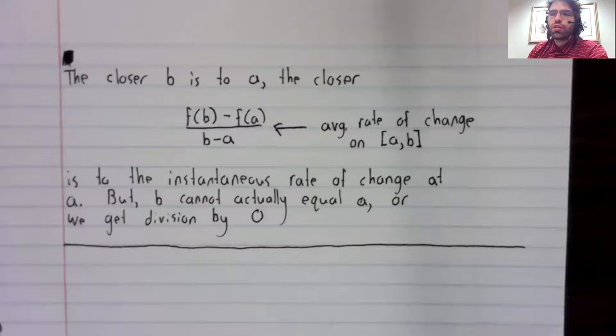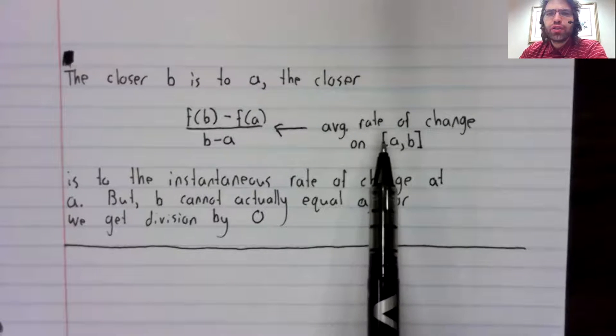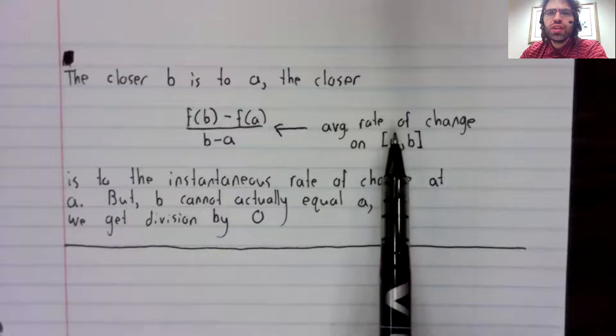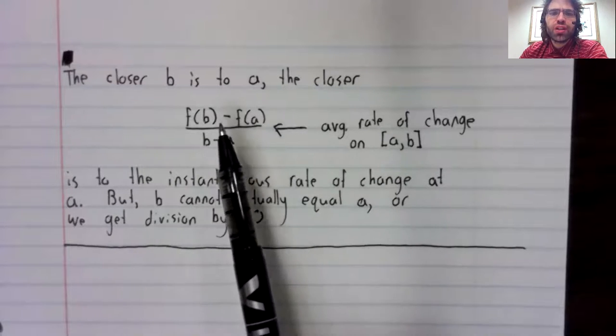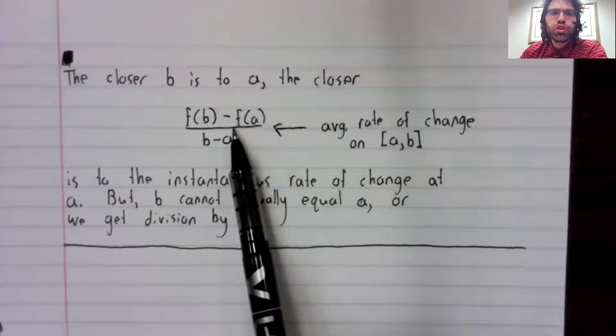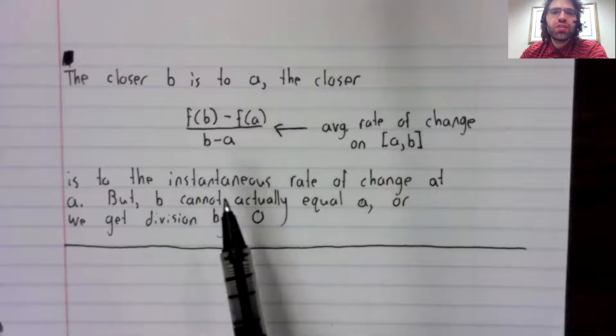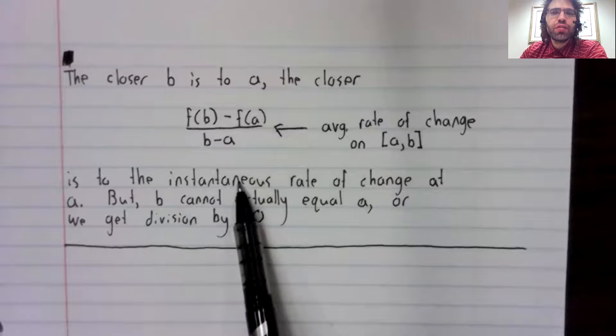So, summarizing and writing down what I said, the closer b is to a, the closer the average rate of change on this interval, which is given by this fraction, is to the instantaneous rate of change at a.